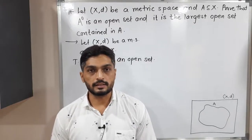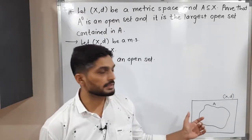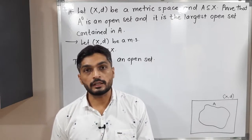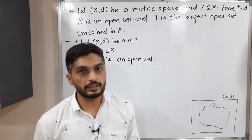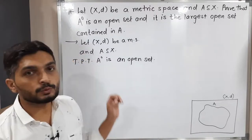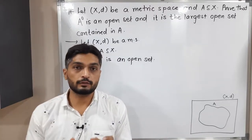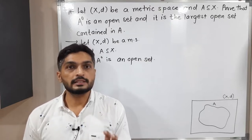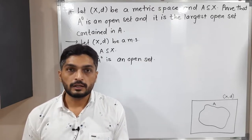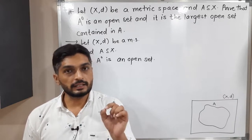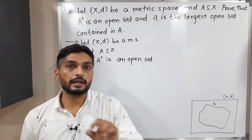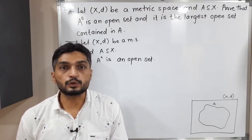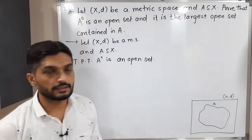Hi everyone. Let us discuss this result. In this result, we have a metric space X, d, and A is a subset of X. What we have to prove is that A interior is an open set. I have written everything here. Our target is to prove that the interior — the set of interior points of A — is an open set. When we have any set and we have to prove it is open, we use a simple technique: we take any arbitrary point and try to find a ball around it which is a subset of that set. I am going to use the same technique to prove A interior is an open set.